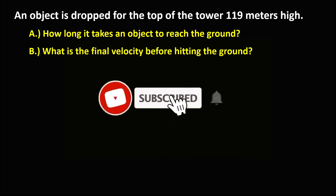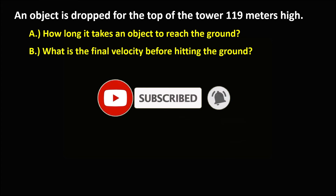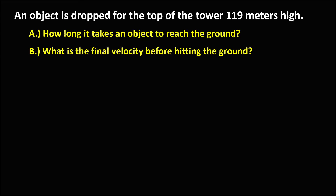Let's solve this problem. An object is dropped from the top of a tower that's 119 meters high. We need to find how long it takes the object to reach the ground, and what is the final velocity before hitting the ground.